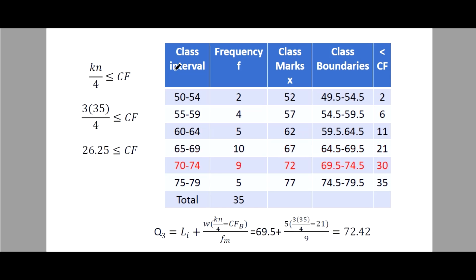For the third quartile: 3×35÷4 = 26.25. The nearest cumulative frequency greater than 26.25 is 30, so that is the location of Q3. The lower class boundary is 69.5, class width is 5. Then: 3×35÷4 minus the cumulative frequency before, divided by the frequency. Using your calculator, you get 72.42.